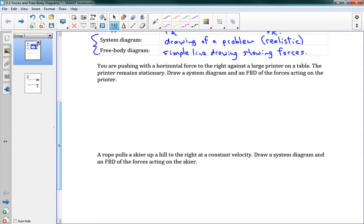The first problem says you are pushing with a horizontal force to the right against a large printer on a table. The printer remains stationary. Draw a system diagram and a free body diagram of the forces acting on the printer. And notice, free body diagram, we just call that FBD. So I'm going to draw a system diagram first for my printer. So my printer looks something like this, something along these lines. And maybe it's got a little, let's say it's got a little scanning bed on the top here. So it looks maybe something like this. There's my printer. And let's say it's got a little paper tray in the front here. Maybe it's got a bit of paper coming out the front, like this. And we'll put it on top of a table just for good measure. It's on top of a table.